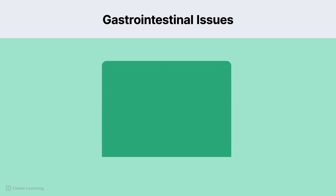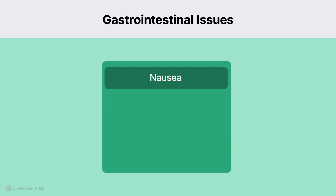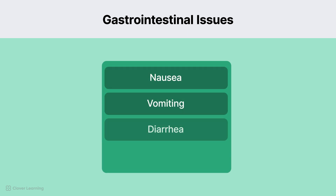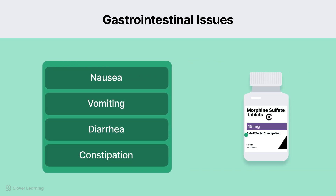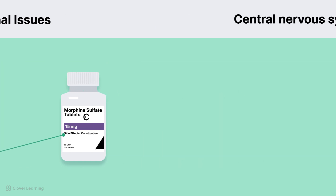Gastrointestinal issues include nausea, vomiting, diarrhea, and constipation. For example, morphine is known to cause constipation.